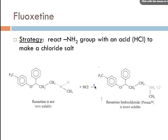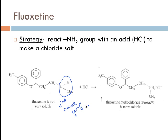A precursor to Prozac is also not very soluble, containing a secondary amine group that makes it weakly basic. If we react it with a strong acid, we make it ionic — forming an NH2+ with a Cl− group. This ionic group makes the compound more soluble in the body, so reacting this weakly basic group with a strong acid should cause more of the drug to reach its target in the body.